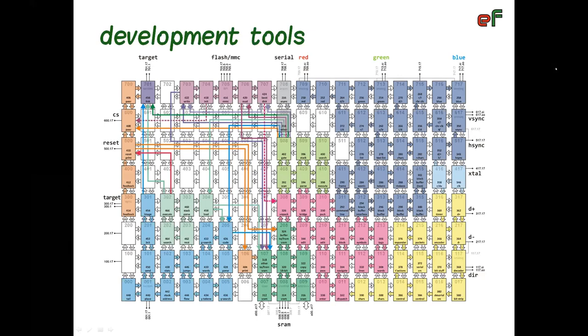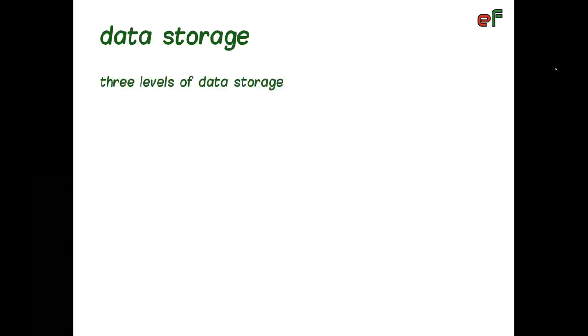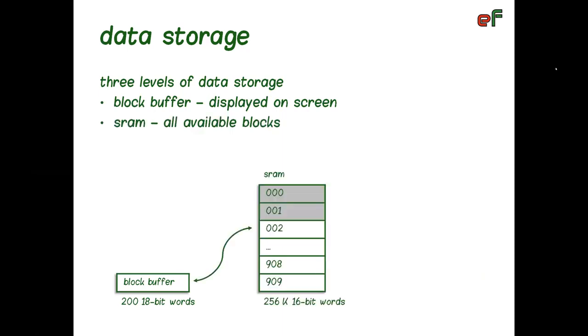Until now, we've learned that SRAM is used to store source blocks. We've just seen that output of word peer is stored in block number 1 in SRAM. And we also know that command line content is stored somewhere in SRAM too. Therefore, it might be a good time to say a few words about data storage. There are basically three levels of data storage in Etherforth. First is a block buffer located in the video module. It has capacity of 218-bit words, and its content is continuously read and displayed by the video module. Only during vertical synchronization pulse, the buffer is accessible to the rest of the system.